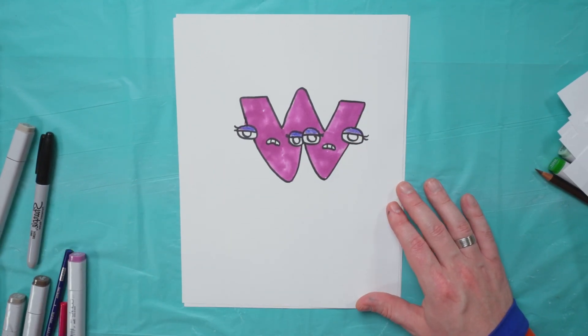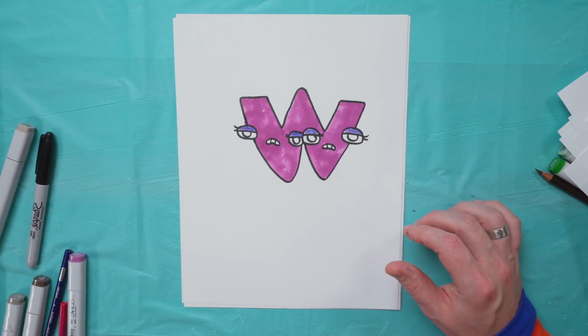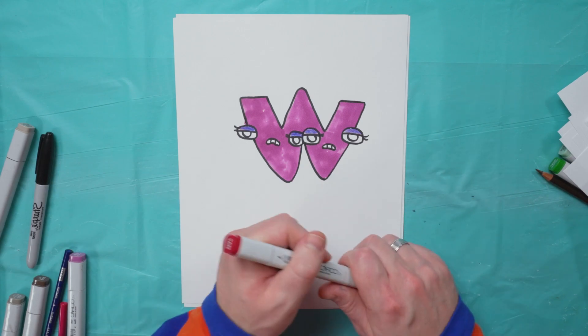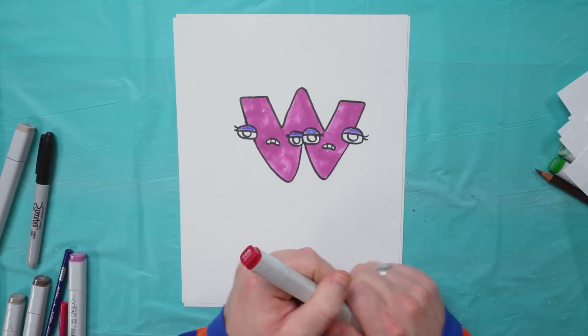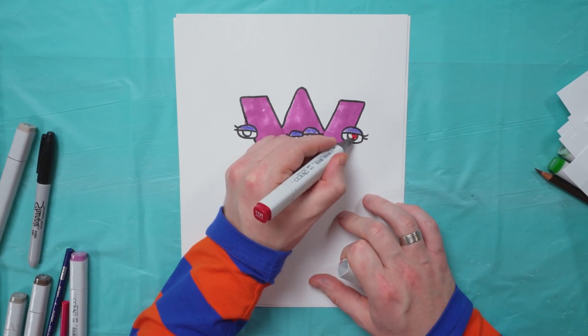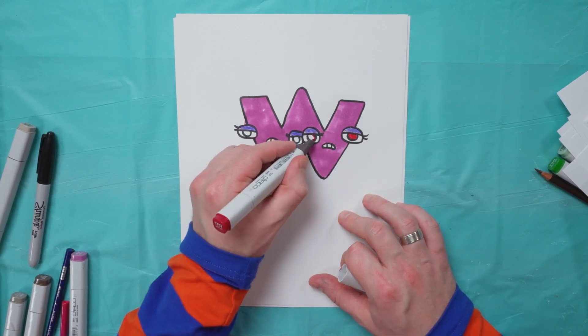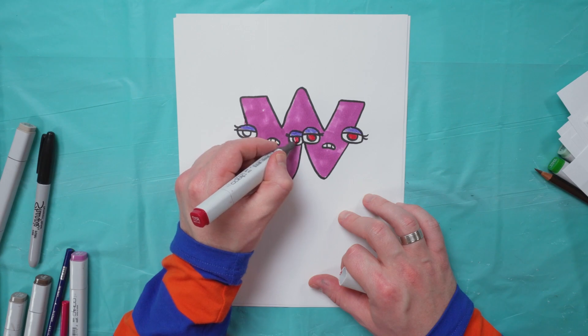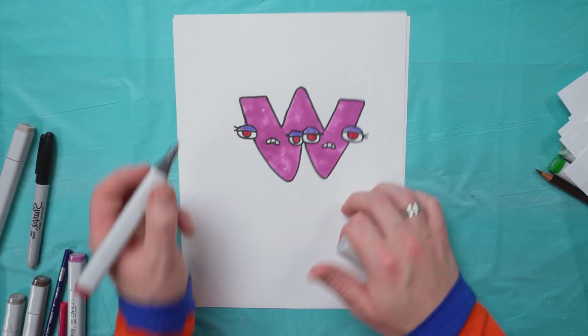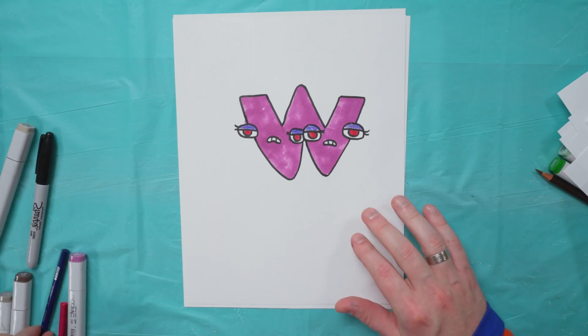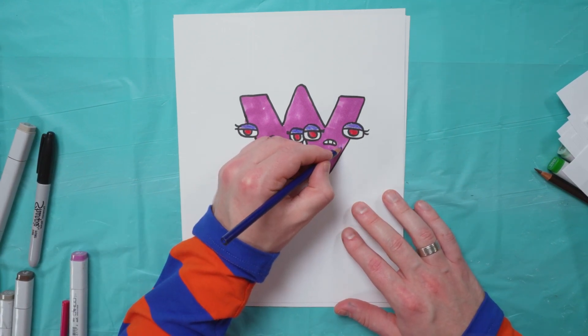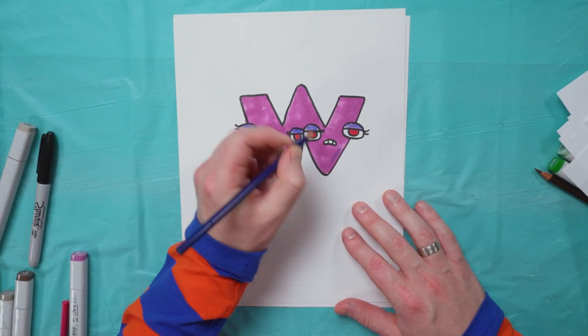And now we have to fill in the pupils of the eyes. So we're going to use this reddish marker and fill those in. Perfect, that looks so cool. Okay, before we're done, take my colored pencil again, just add some texture here on the side.